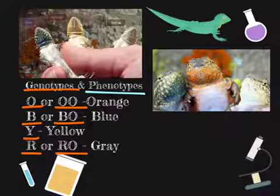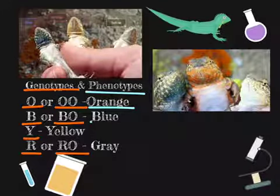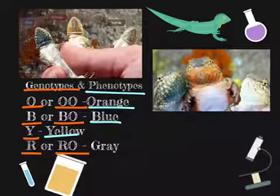And for the phenotypes, it goes orange, blue, yellow, or gray.